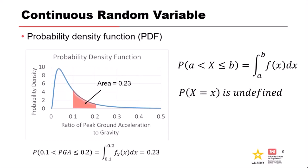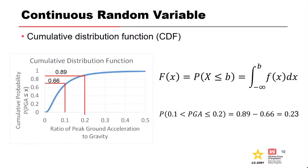It's really important to remember that the probability for a specific value is undefined, because not recognizing that leads to common mistakes in risk analysis. The cumulative distribution function for continuous random variables gives us the probability that the random variable is less than or equal to a particular value. Formally, that's written as an integral of the density function from minus infinity up to the value of interest.